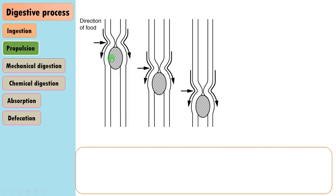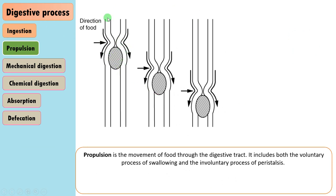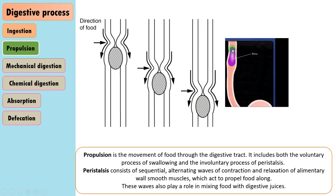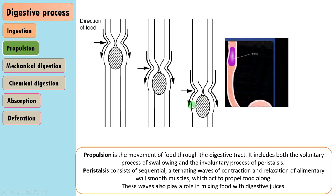The second process is propulsion: the movement of food along the alimentary canal or digestive tract. It includes both the voluntary process of swallowing and the involuntary process of peristalsis — a sequential alternating wave-like movement caused by contraction and relaxation of the alimentary wall smooth muscles, which propels the food along the digestive tract, mixes the food with digestive juices, and is the reason we can even eat food upside down.